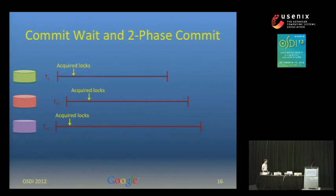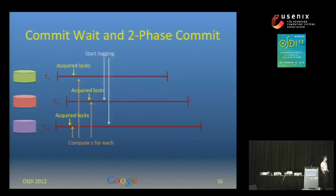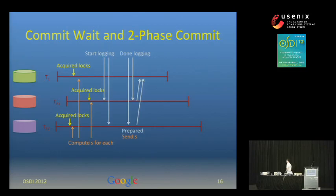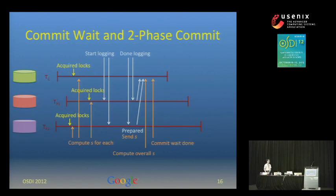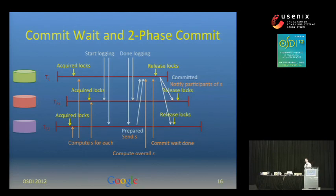Commit wait also interacts with two-phase commit, and we can overlap that work as well. With three participants, each acquires locks and picks a timestamp using the described algorithm. The two non-coordinator participants log their prepared messages, send prepared back to the coordinator with their values of S piggybacked. The coordinator computes an overall S timestamp, does commit wait, releases locks, then sends a committed message piggybacking the overall S value back to the participants, after which the participants release their locks. This overlaps the work of logging the prepare with commit wait.